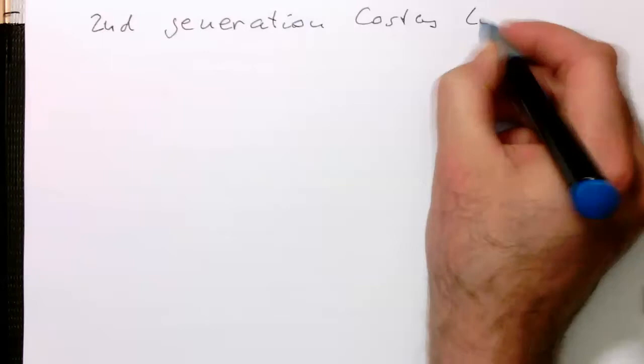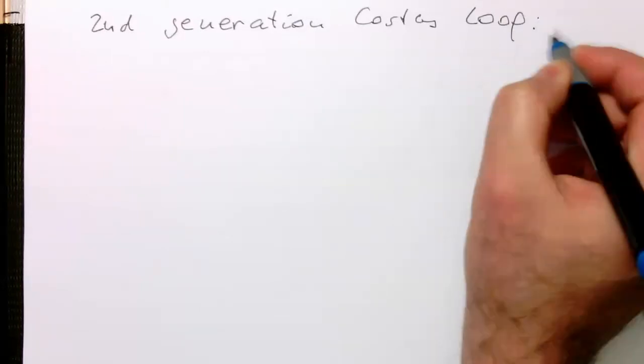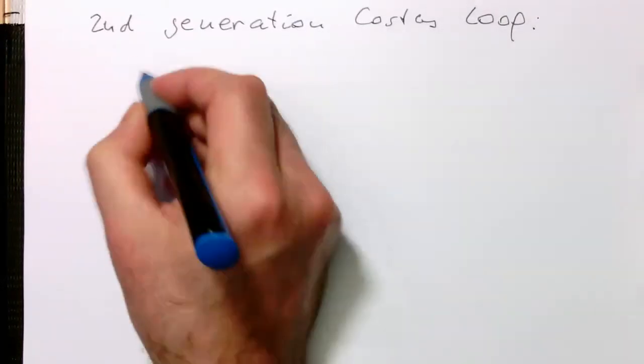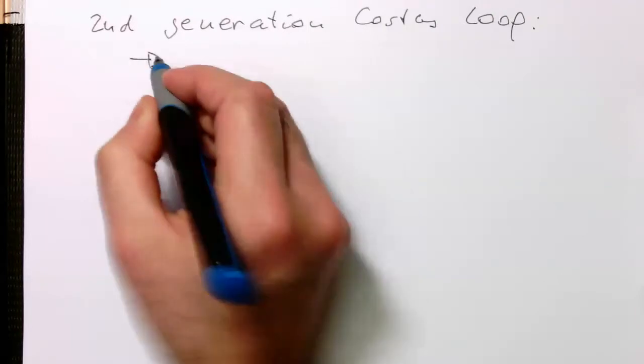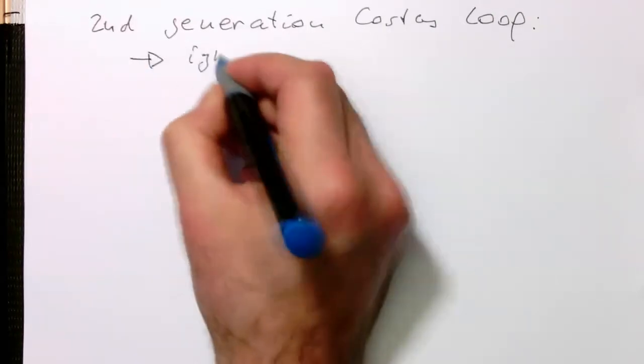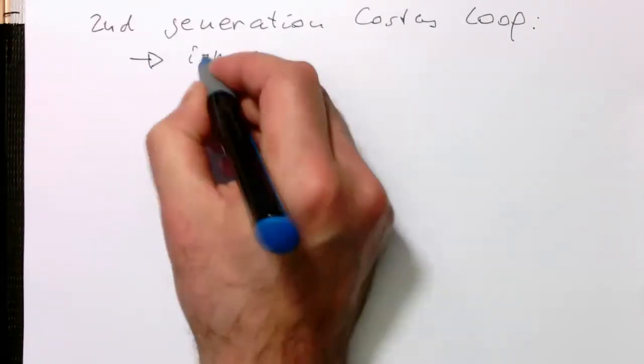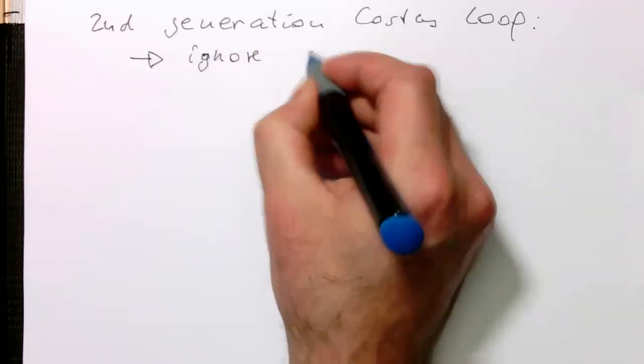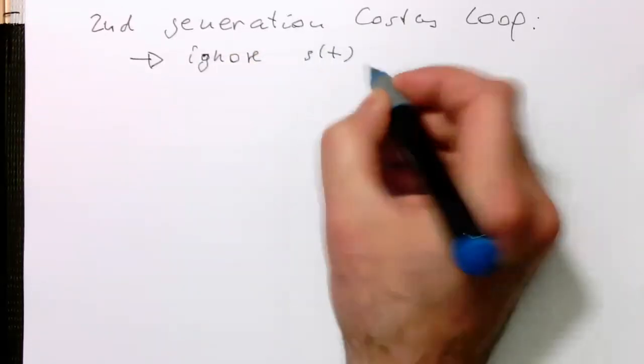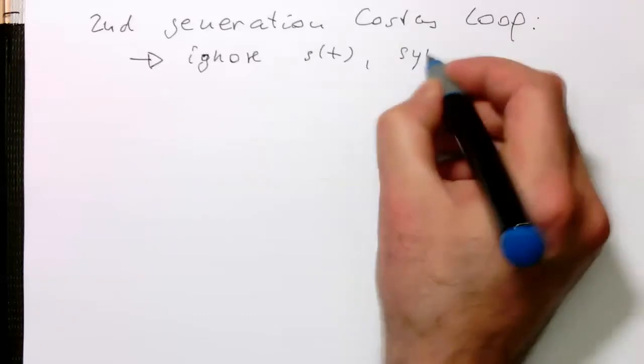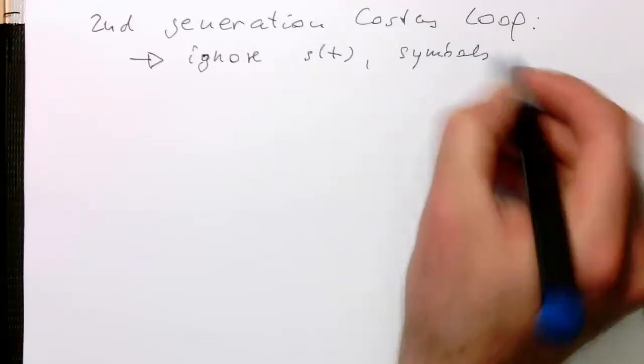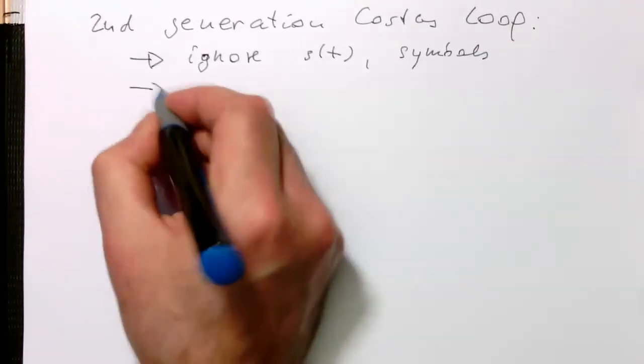What we would like to have is obviously we would like to still ignore S of T, our symbol stream, so it is not messing up our phase. So S of T symbols so that they are no longer interfering with our PLL.